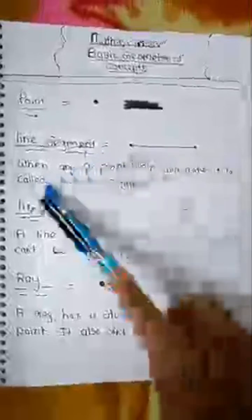Next it will be line segment. When any two points join with a line, it is called a line segment. See the two points and a line joins them. Line segment.